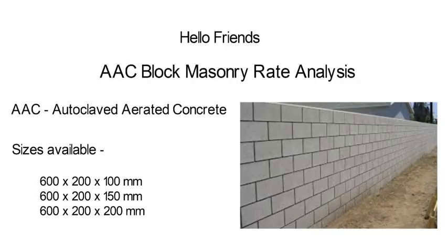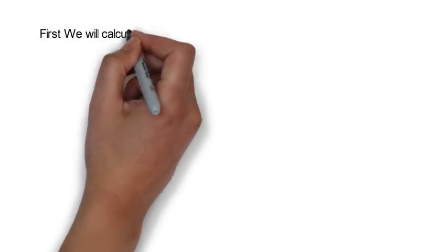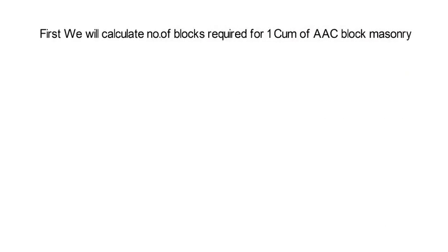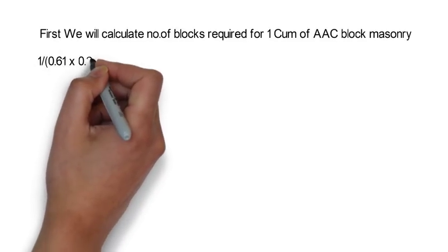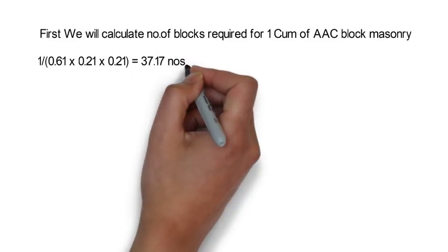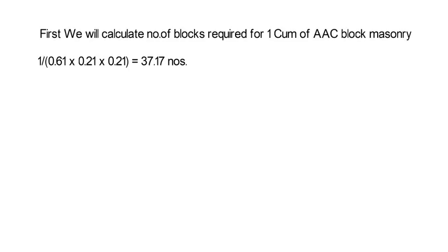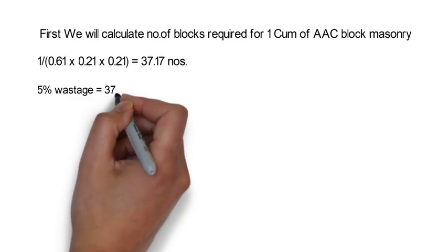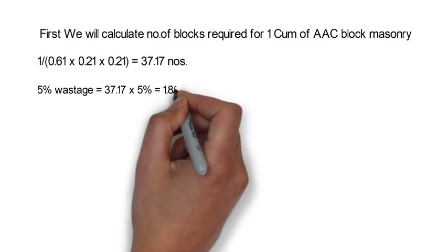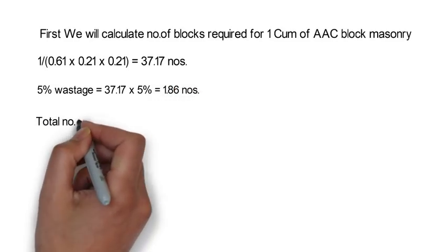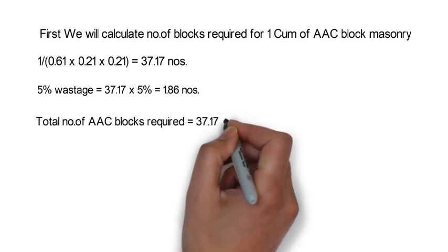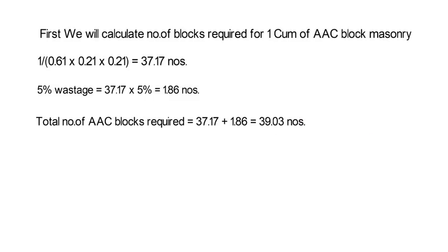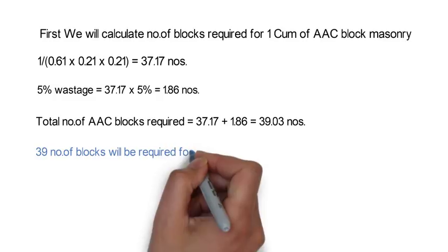For analysis purposes we will consider the size of 600x200x200mm, which can be used in the construction of a 230mm wall. First we will calculate the number of blocks required for 1 cubic meter of AAC block masonry. The formula is 1 divided by (0.61 x 0.21 x 0.21) is equal to 37.17 numbers. Here I have considered 10mm cement mortar in between the blocks, hence I added 10mm to the length, width, and height of the block. Now we consider 5% wastage, which gives 1.86 numbers. So total number of AAC blocks required shall be 37.17 plus 1.86 is equal to 39.03, approximately 39 blocks per cubic meter.